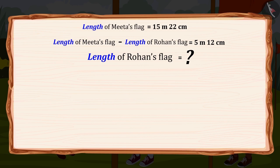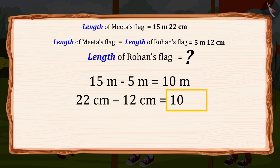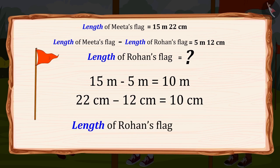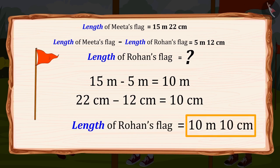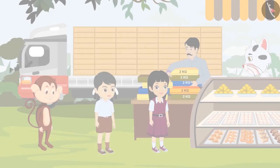Yes, 15m minus 5m equals 10m, and 22cm minus 12cm equals 10cm. That means the length of Rohan's flag is 10m 10cm. Oh wow Meeta, absolutely correct answer!